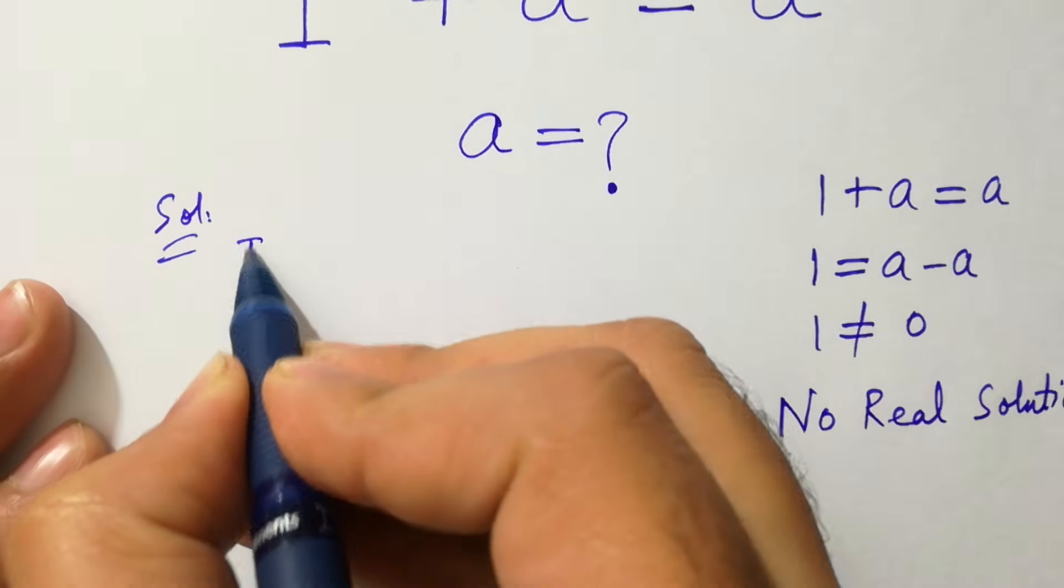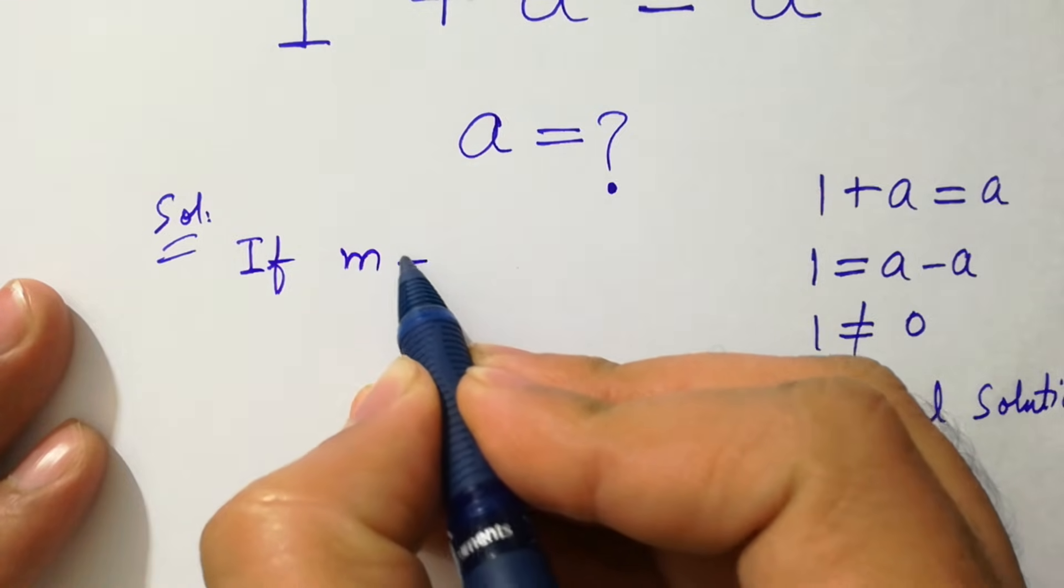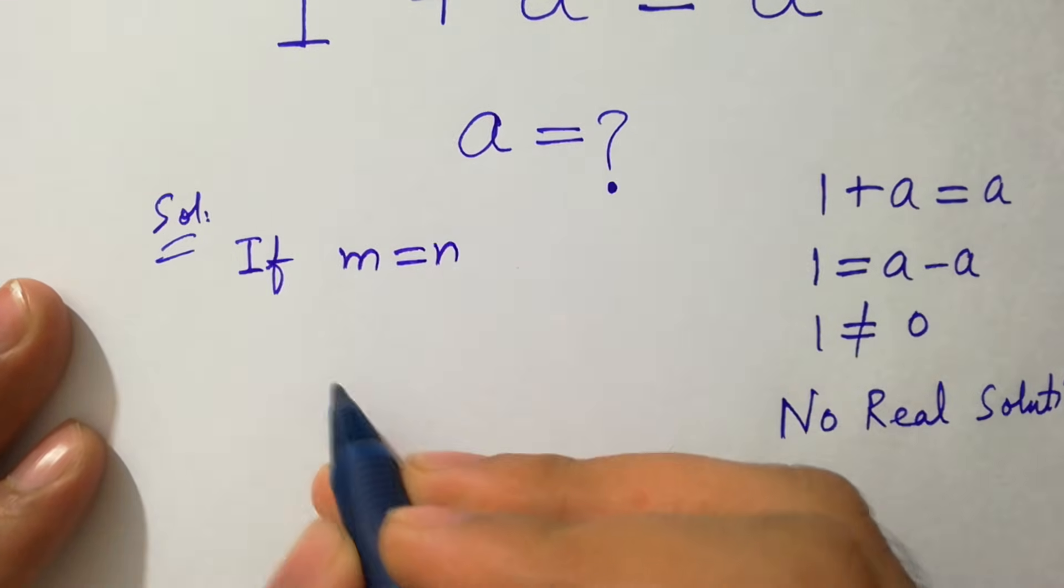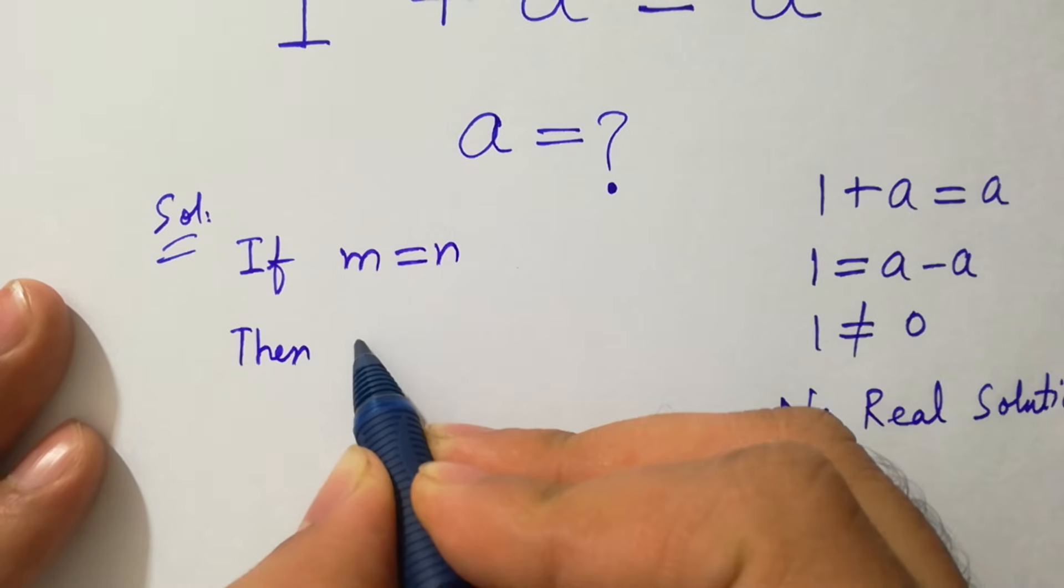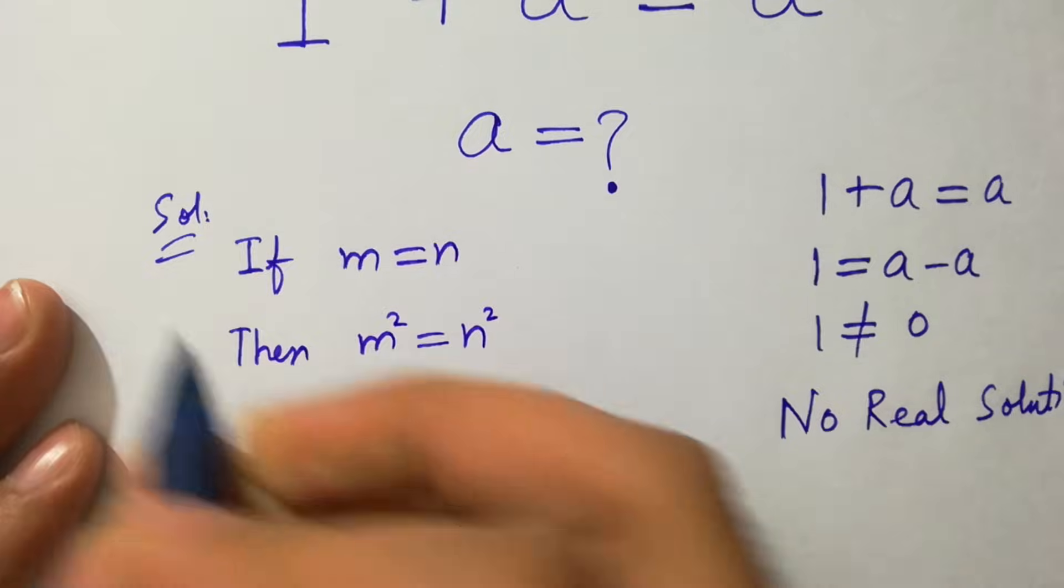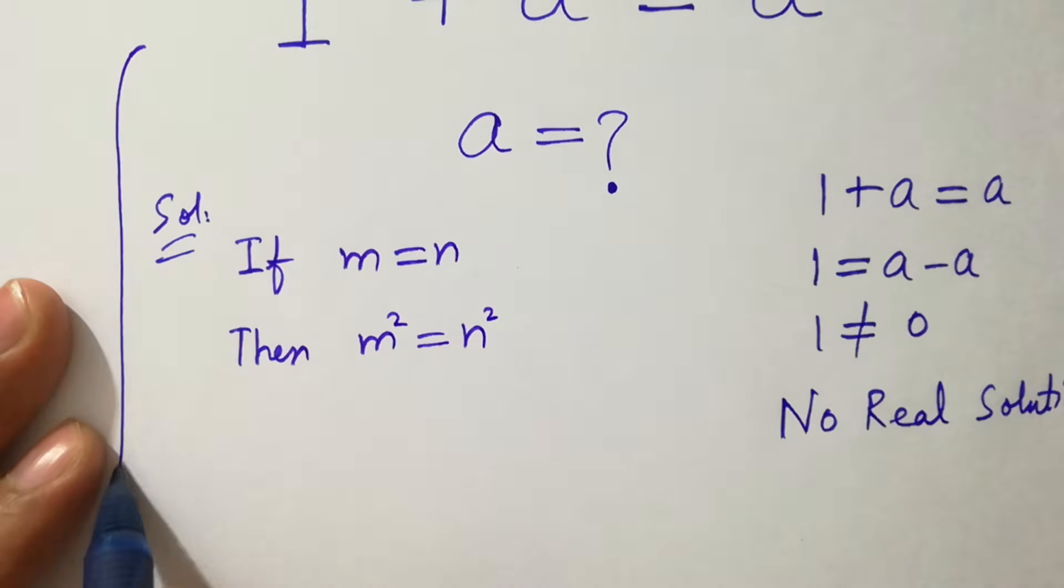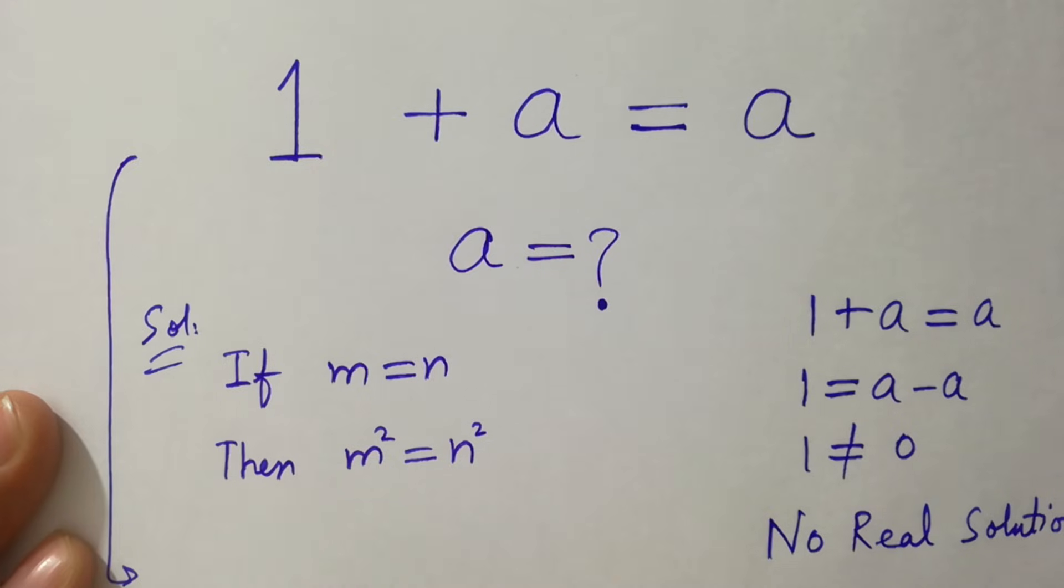But if m = n, then m² = n². Then we can take the square on both sides of this equation.